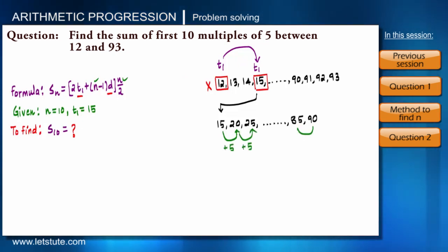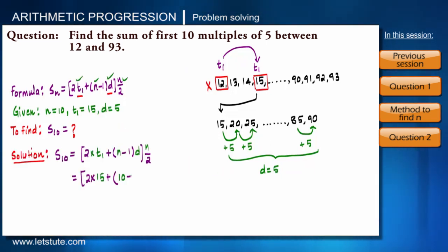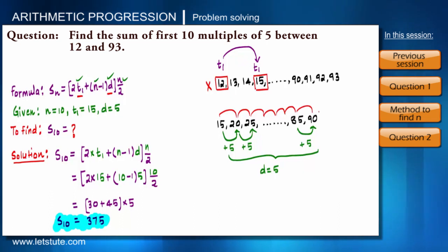So put all the values and total sum becomes S10 equals 375. That means the first 10 multiples of 5 between the range 12 and 93 is 375. One point I would like to raise: we have not added all the multiples of 5 between 12 and 93, we have just added first 10 multiples, right?